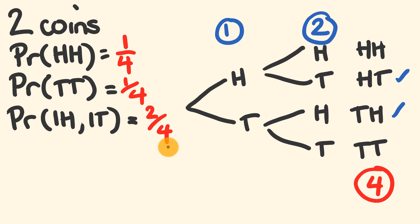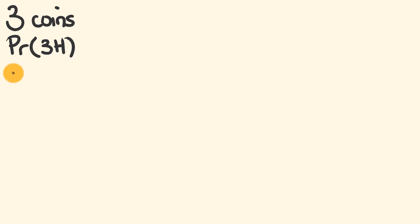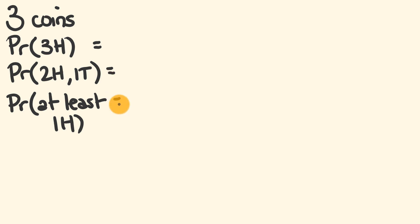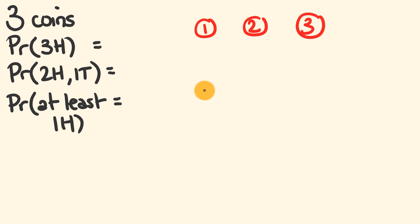Let's up the ante and look at three coins. We want to find the probability of getting three heads, the probability of getting two heads and one tail in any order, and the probability of getting at least one head. We'll do that by drawing a tree diagram. There are three events, so I'll draw those in. Starting here, we have heads or tails for that very first throw.